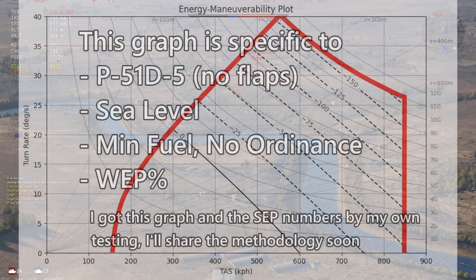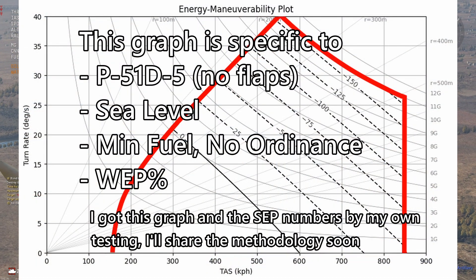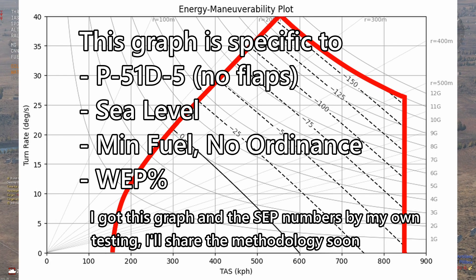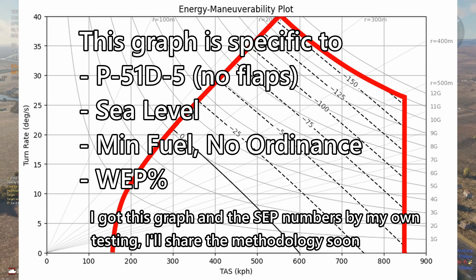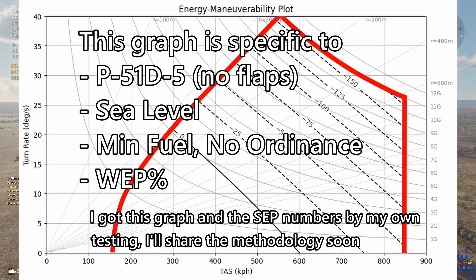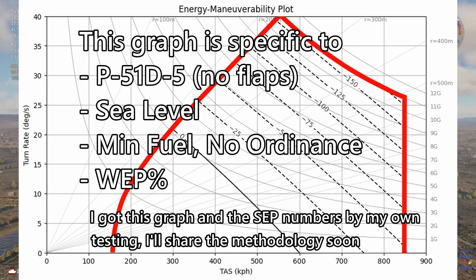Also, to be clear, the numbers and bounds that I've listed for this graph in particular are specific to the P-51D5 at sea level with no flaps on minimum fuel and no ordnance at WEP percent throttle. How I got these numbers? Well, I'll have to explain that in the next video.